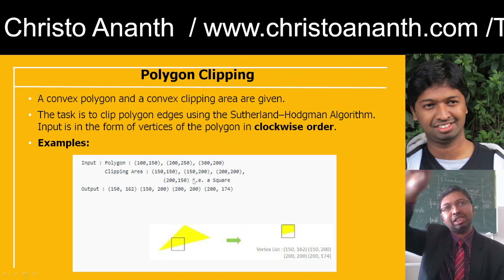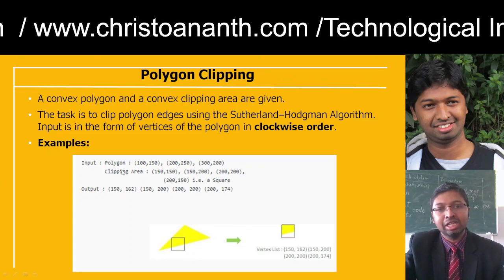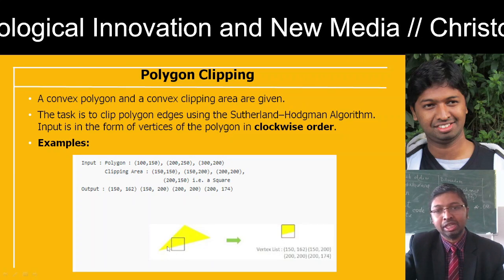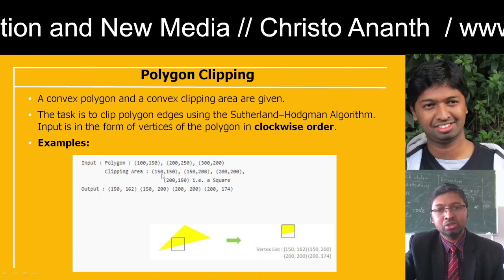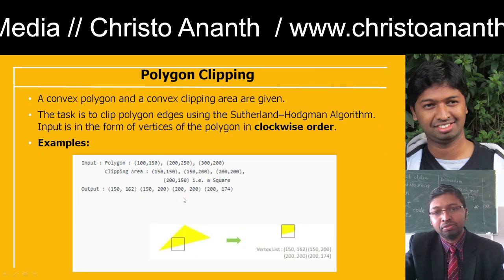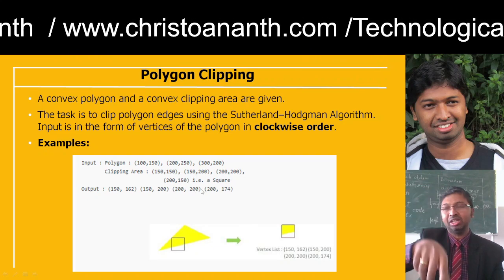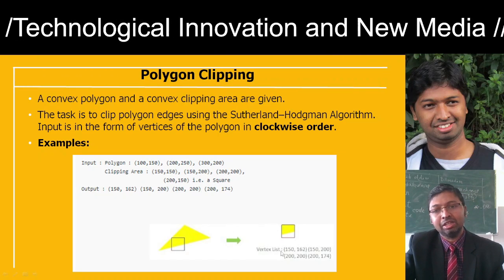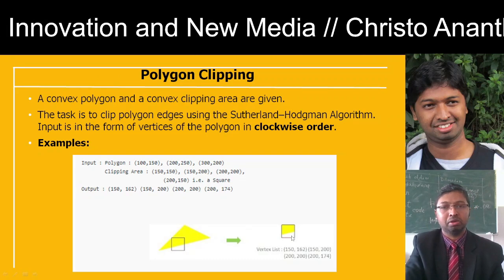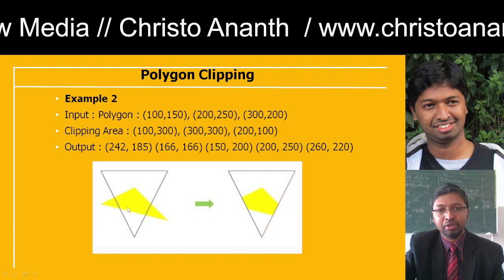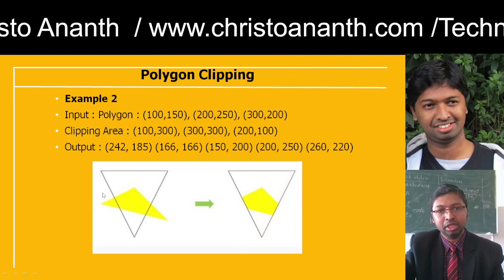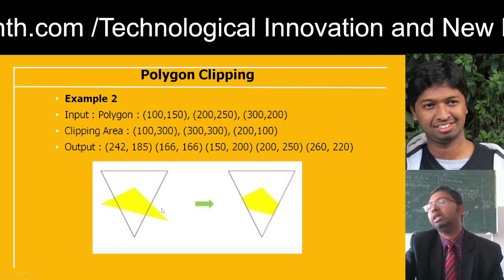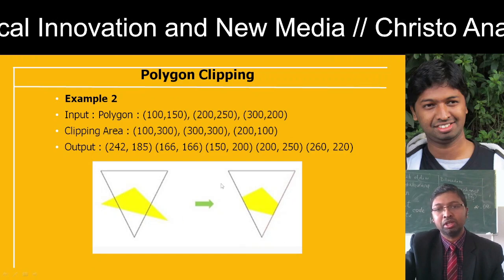The input vertices are taken in clockwise order. For example, the input polygon vertices are (100,150), (200,250), (300,200). The clipping area is a square with vertices (150,150), (200,200), (200,150), and (150,200). We categorize the vertex list corresponding to the edges and get the output corresponding to these points.